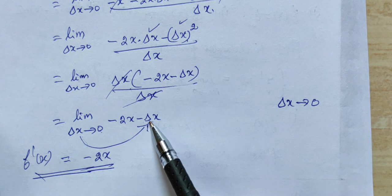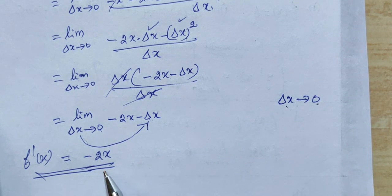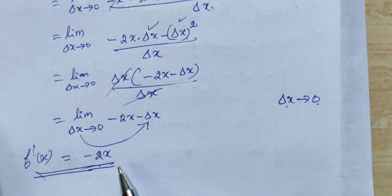As delta x tends to 0, the final answer for this: f'(x) = -2x.